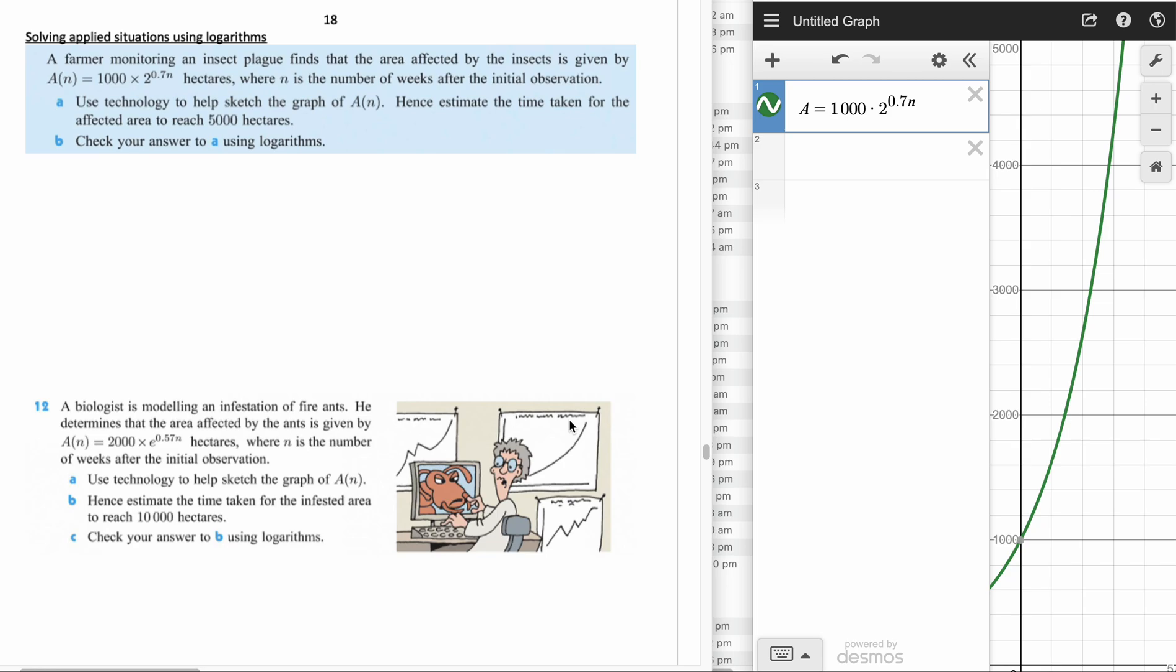This video covers logarithms for applied situations. The situation here is a farmer monitoring an insect plague and finds that the area affected by the insects is given by this formula, where n is the number of weeks after the initial observation. We can see the insect plague area is going to be growing because it's a base 2 function and there hasn't been any reflection on any axis.